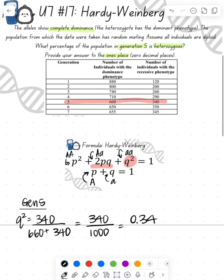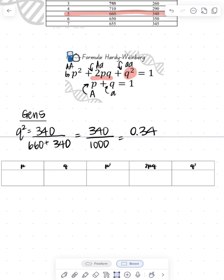Now we've got to use that chart because we're looking for heterozygous. So we fill in the chart. We know that Q squared is 0.34.